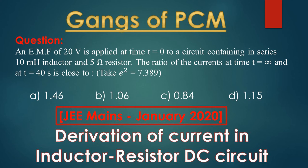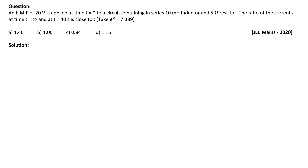Hello everyone, welcome to Gangs of PCM. This is Priyanshu and together we are going to solve all your physics related worries. The question we are going to solve today is from the JEE exam held in January of 2020. This question is from chapter alternating current, and to solve this question we need to know the concept of current in an inductor-resistor circuit at any given time.